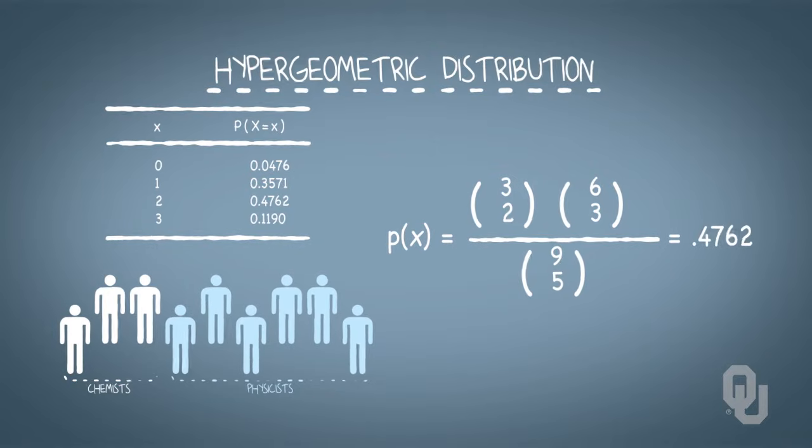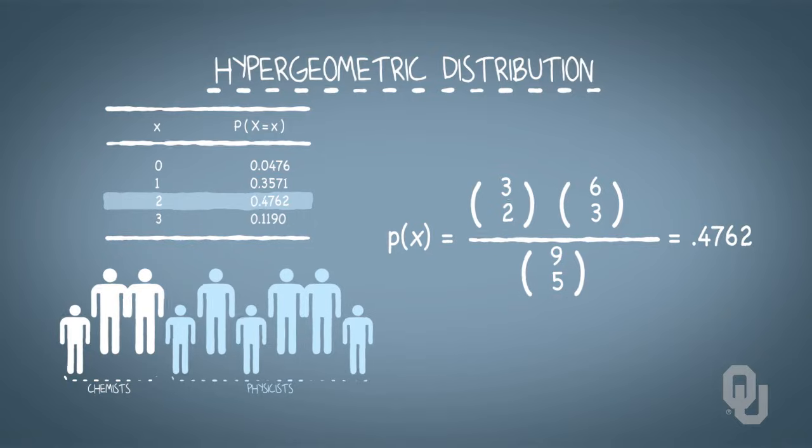Note that the possible realizations of random variable X include only 0, 1, 2, and 3. And we can use the hypergeometric distribution function to calculate the probability of each of those realizations. We see from the distribution that the most likely realization is X equals 2. We are most likely to see a committee of size 5 made up of 2 chemists and 3 physicists.